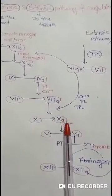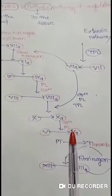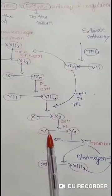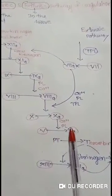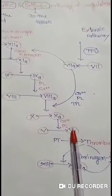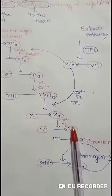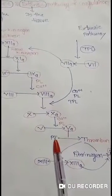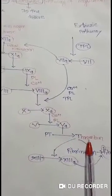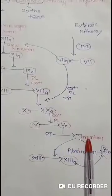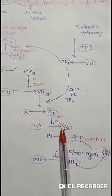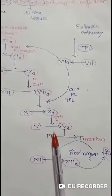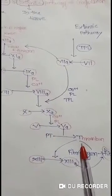This Activated Factor Number 10, with the help of Calcium and Phospholipase Enzyme, converts Factor Number 5 to Activated Factor Number 5. When this activation of Factor Number 5 occurs, it converts Prothrombin to Thrombin.